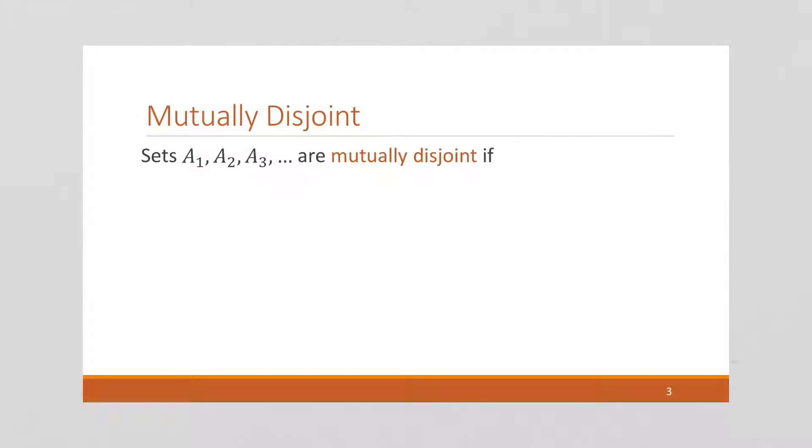Similarly we can talk about mutually disjoint sets. We say sets A1, and these are index sets, notice, A1, A2, A3, and so on are mutually disjoint if there is no overlap between any of them.